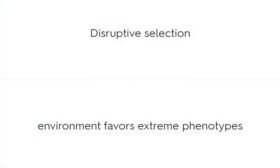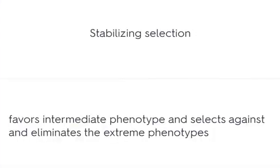Disruptive selection: the environment favors extreme phenotypes. Stabilizing selection favors the intermediate phenotype and selects against and eliminates the extreme phenotypes.